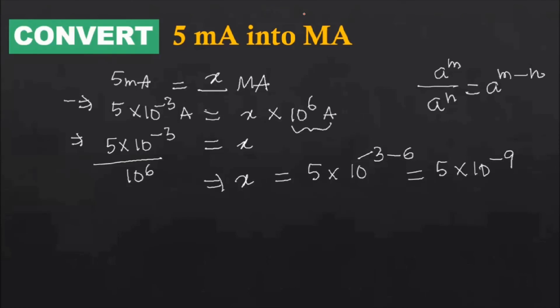Now I can write the final answer here. So 5 milliamperes is equal to 5 into 10 power minus 9 megaampere. Let me put it in a box. So that is your answer.